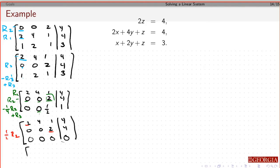So if I do that, what do I get? So I'm going to leave the top row alone. I'm going to get 0, 0, 2 times 1/2. 4 times 1/2 is 2. And I leave that alone.